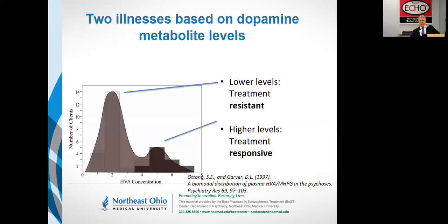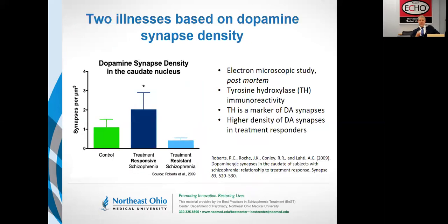Here are the data. There's a bimodal distribution of HVA — homovanillic acid, a metabolite of dopamine. Under very precise measurement conditions, plasma HVA and more so CSF HVA correlate with dopamine turnover. In the band with higher HVA, these are the treatment responders — a bimodal distribution of metabolites. If one looks at synaptic density, the density of dopamine synapses in the caudate nucleus, we find again two populations. The green bar represents normal dopamine synaptic density. The elevated blue bar represents the treatment responders — they have more dopamine synaptic terminals. And the treatment-resistant group actually has lower levels of presynaptic dopamine terminal markers.